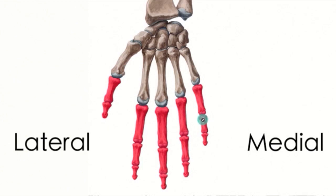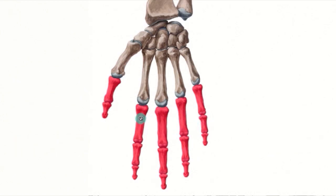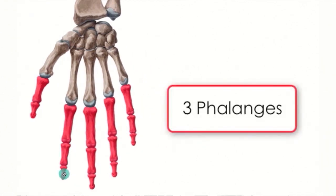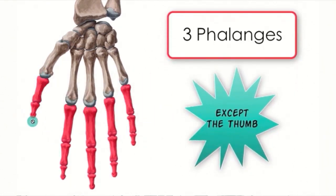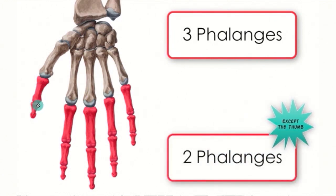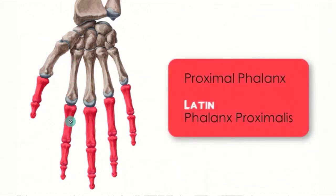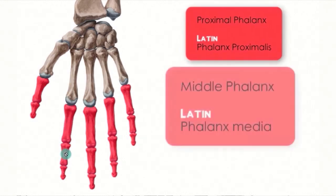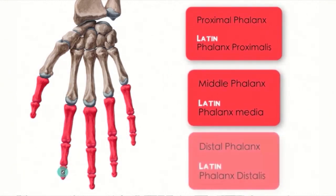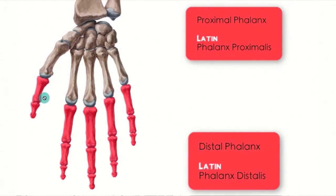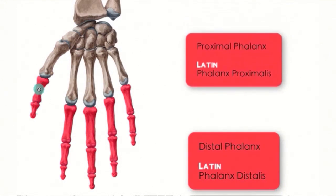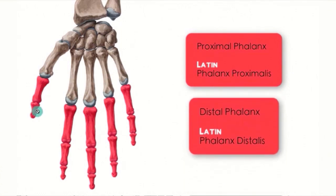All your fingers have one, two, three phalanges — except your thumb, which only has one, two phalanges. For a regular finger other than the thumb, there is a proximal phalanx, a middle phalanx, and a distal phalanx. On the thumb, because you only have two, you would say there is a proximal phalanx and a distal phalanx.